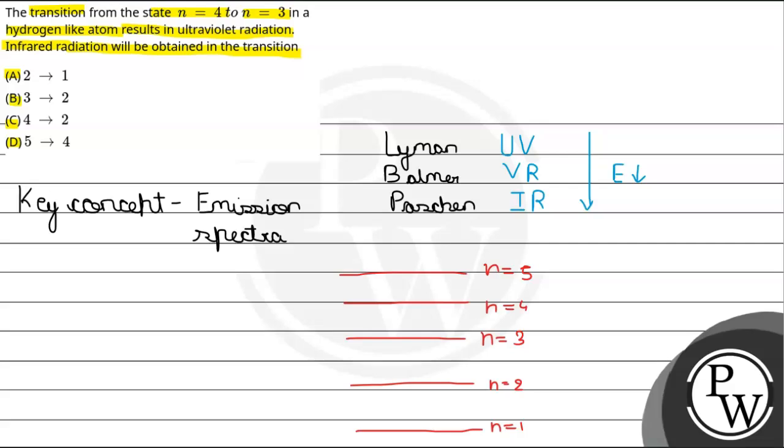तो पहला option में हमें दिया हुआ है 2 से 1, उसके बाद B में हमें दिया हुआ है 3 से 2, फिर C में दिया हुआ है 4 से 2, D में दिया हुआ है 5 से 4.